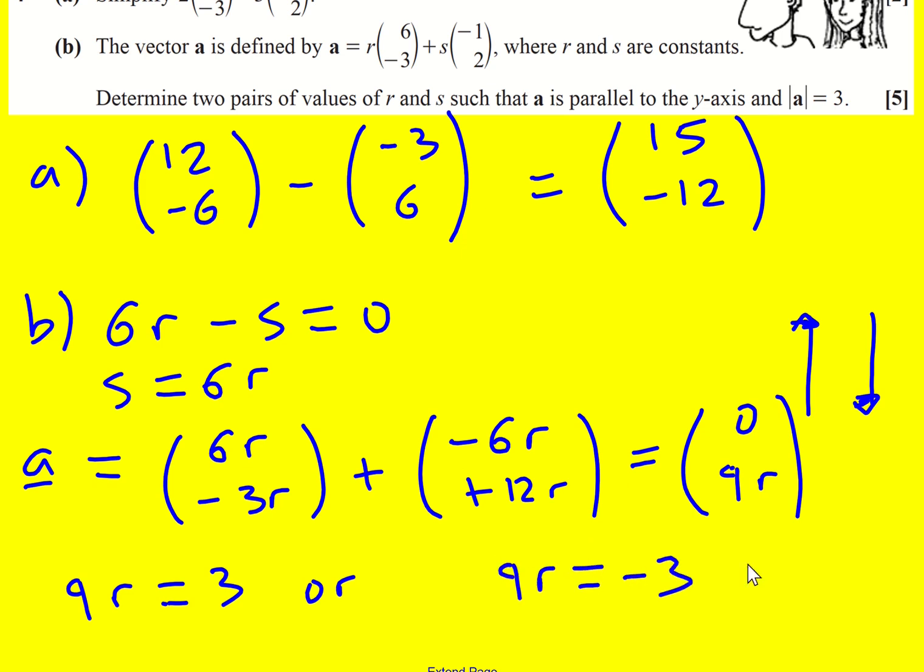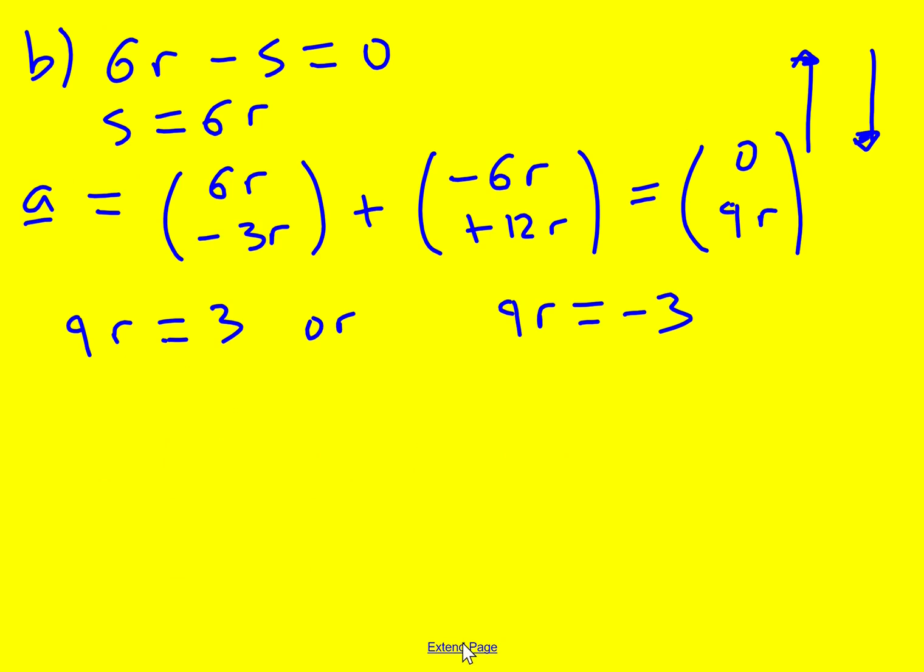If you're not confident about that, you could do Pythagoras' theorem. 0² plus (9r)² must equal 3².